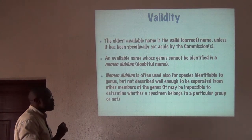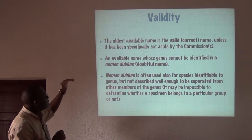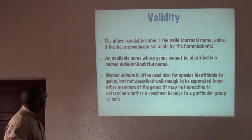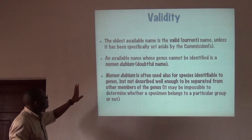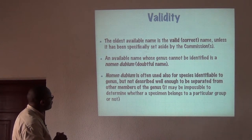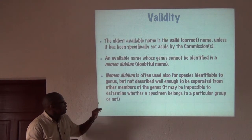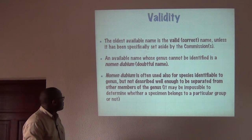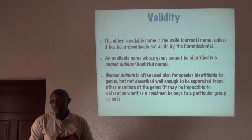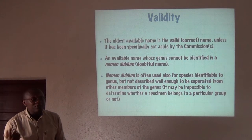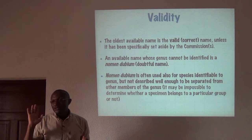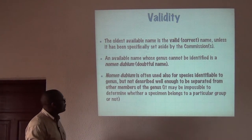The oldest available name is the valid or correct name, unless it has been specifically set aside by one of the commissions, which have certain privileges. An available name whose genus cannot be identified is a nomen dubium — a doubtful name. Nomen dubium is also used for species that may be identifiable to genus but are not described well enough to be separated from other members of the genus. It may be impossible to determine whether a specimen belongs to a particular group, especially in cases where reference material has been lost and is not available for comparison, leaving those specimens as nomen dubia.